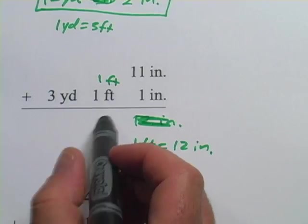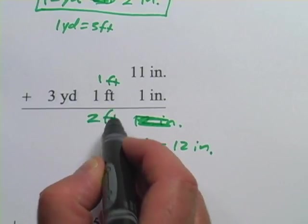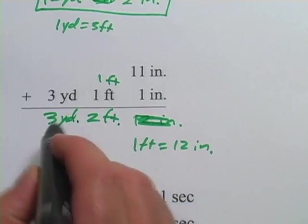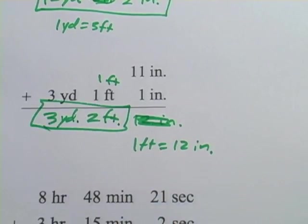Now I've got one foot plus one foot, that's two feet, and I've got just three yards over here, I bring that down, and my answer is three yards and two feet.